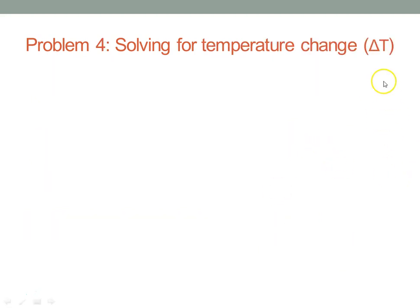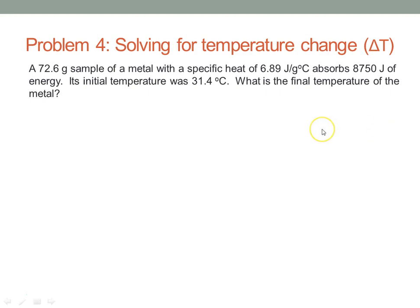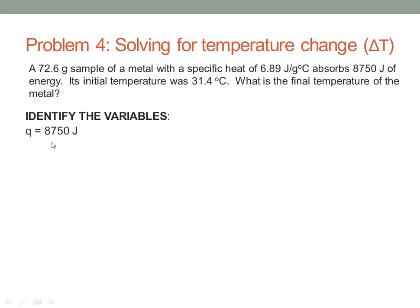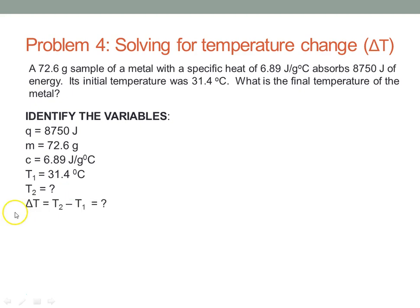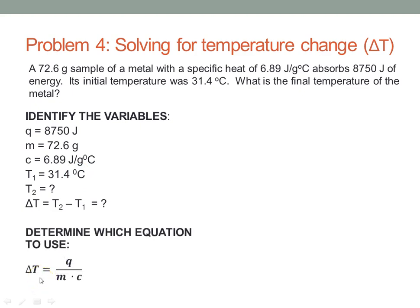The fourth problem: we're going to solve for delta T. A 72.6 gram sample of a metal with a specific heat of 6.89 joules per gram degree C absorbs 8,750 joules of energy. Its initial temperature is 31.4 degrees C — what is the final temperature? We're given Q, M, C, and T1. To find T2, we first solve for delta T, since delta T equals T2 minus T1. Our rearranged equation is delta T equal to Q divided by M times C.